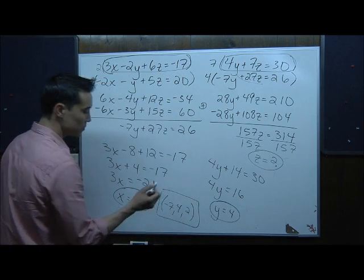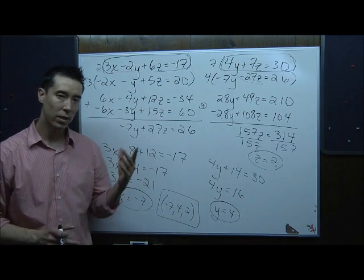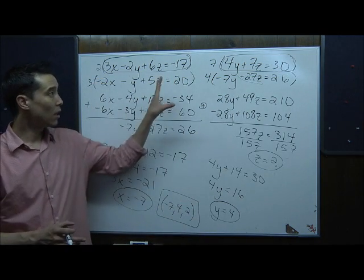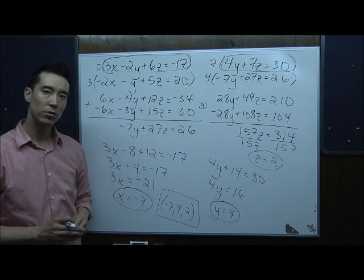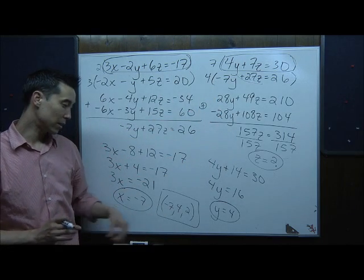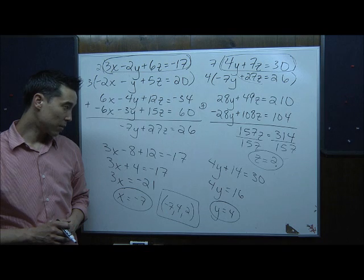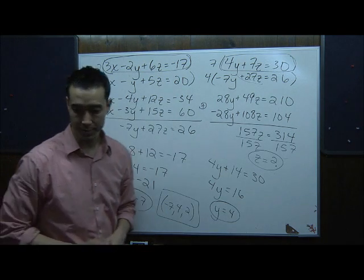These systems of equations with three unknowns take a lot of time, but just be very systematic in your approach and you should be able to get the answer. The answer for number 4 is (−7, 4, 2).